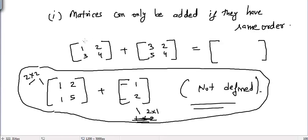Now let's suppose that we have matrices of the same order, like here. How do we add these matrices? We just add the corresponding element of one matrix to the corresponding element of the other matrix.